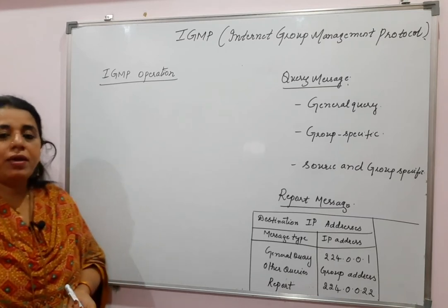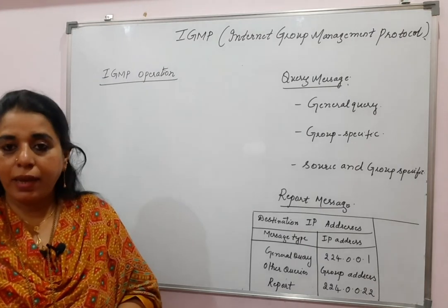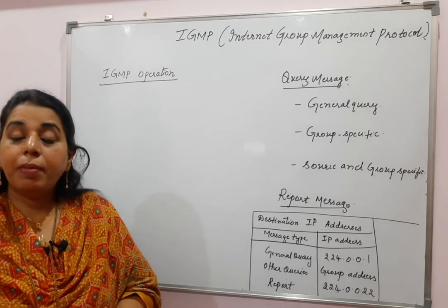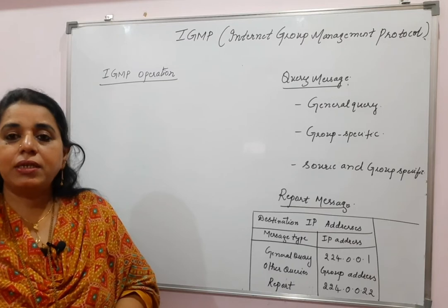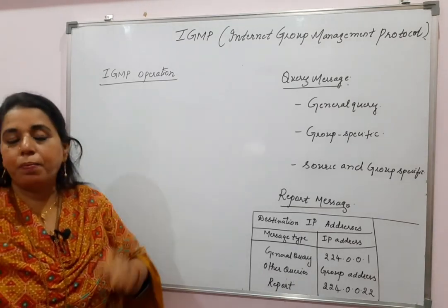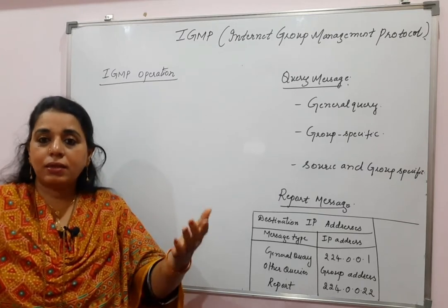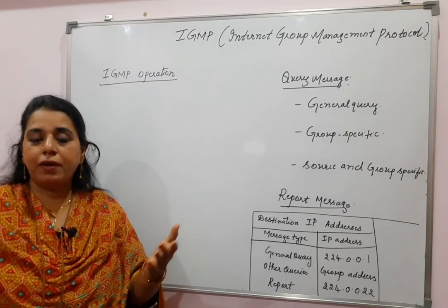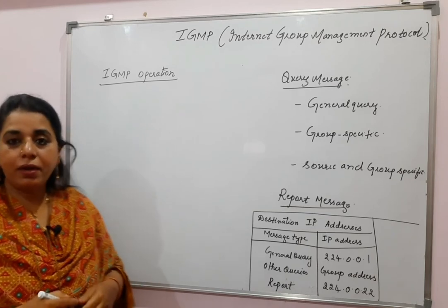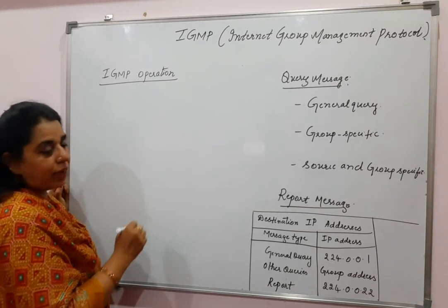We have DVMRP, MOSPF, PIMDM, and PIMSM — all these are the multicast routing protocols. But their functioning is possible because of this protocol, the Internet Group Management Protocol. This is the protocol that is helping DVMRP, MOSPF, and PIMDM to build the multicast tree.